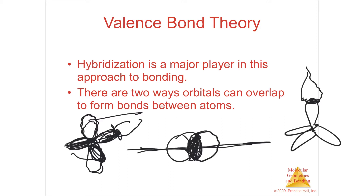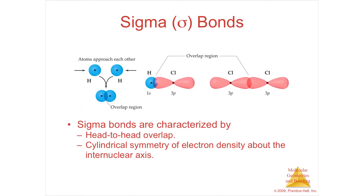And then you have the p that's coming out of the top and the bottom, and they're going to overlap top to bottom — that's going to be called a pi. So you'll have a sigma and a pi, both Greek letters. A single bond is an end-to-end, internuclear axis, tip-to-tip — it's head-to-head overlap, and it's symmetrical, and the electron density is in between. We're just going to call that a sigma bond, or a single bond. A sigma bond and a single bond are the same idea.